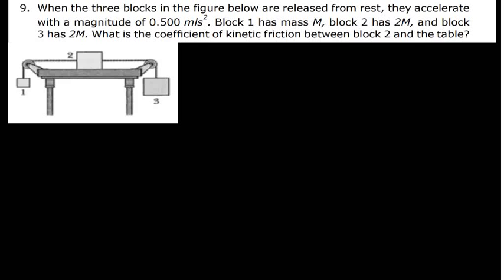We know that friction is going to be present on block 2 only, because block 2 is the one which is in contact with the table. Block 1 and block 3 are not in contact with the table. What we are going to do here is come up with the forces acting on block 1, block 2, as well as block 3.